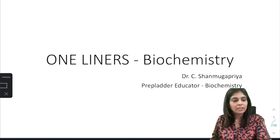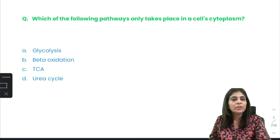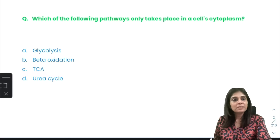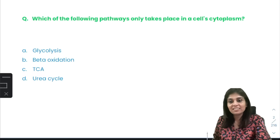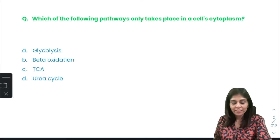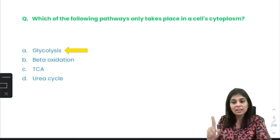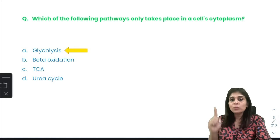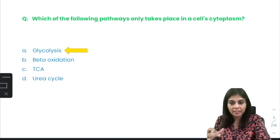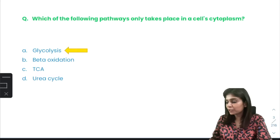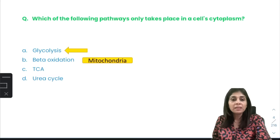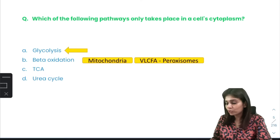The first MCQ — a PYQ — is: which of the following pathways only takes place in the cell cytoplasm? The answer is glycolysis. Glycolysis is the only oxidation that can happen anaerobically and in the cytoplasm. Every other oxidation is bound to happen in mitochondria. Beta oxidation mostly happens in mitochondria, but very long chain fatty acids undergo oxidation in peroxisomes.